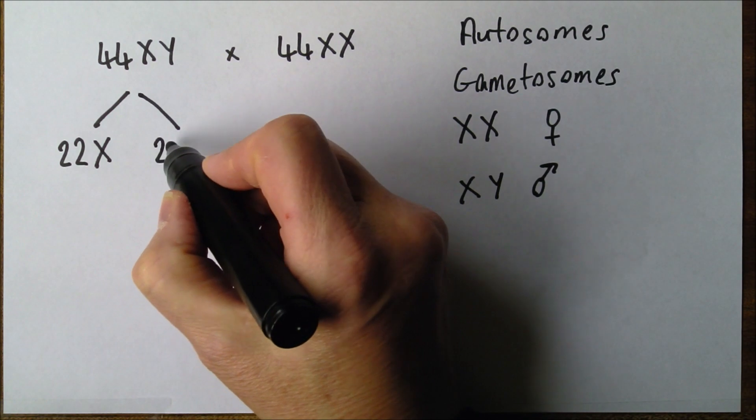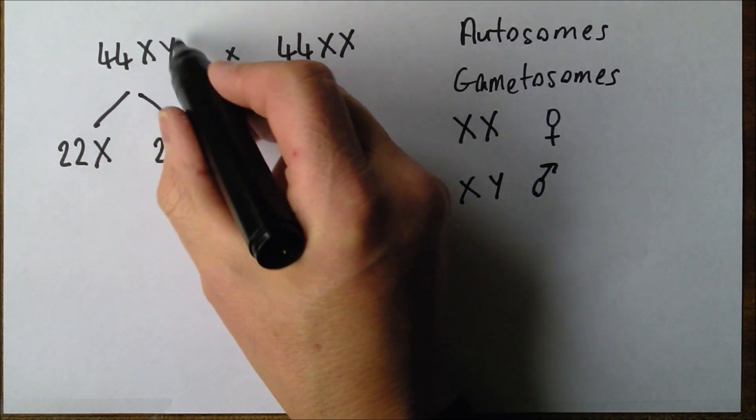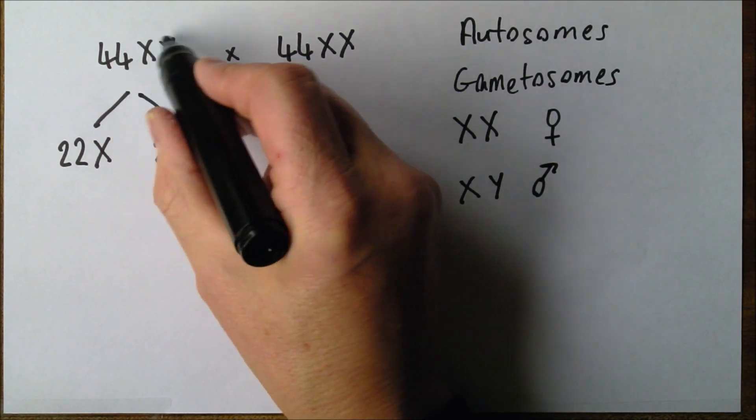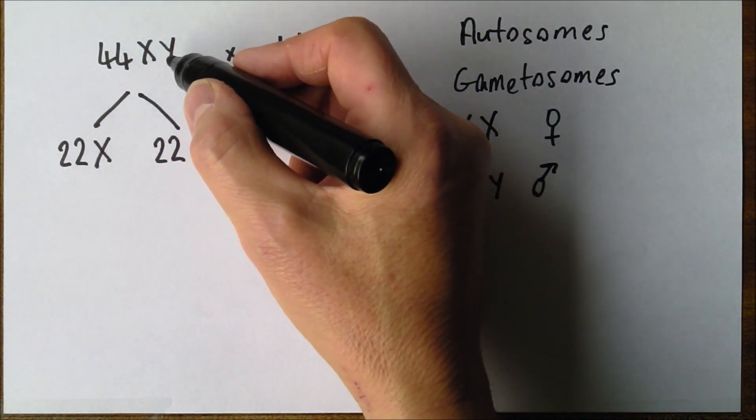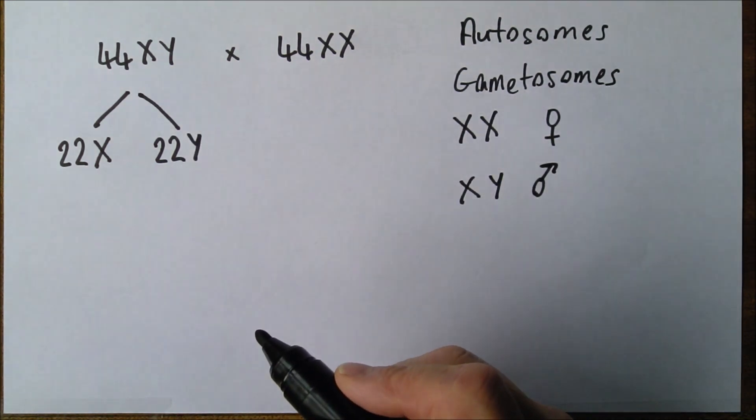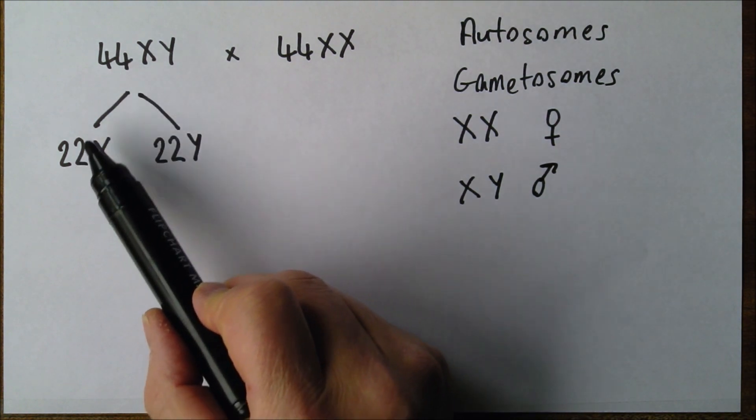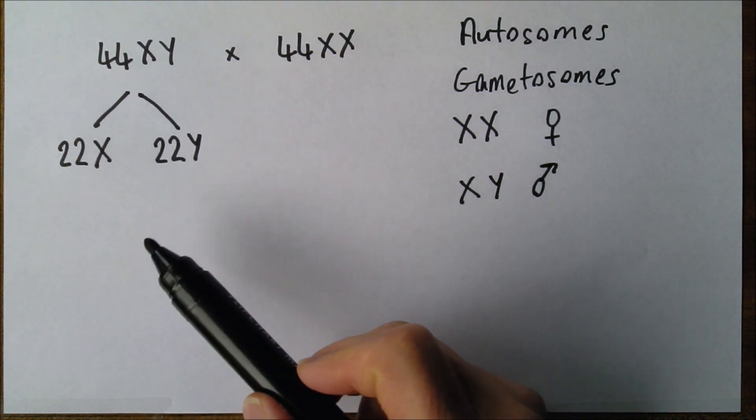And again, the other type of sperm: 22, and in this case the other one of the homologous pair. They're not really homologous because they're not quite the same, but they do form a pair. It's going to be the Y. So one of each homologous pair of chromosomes goes into each of the gametes.